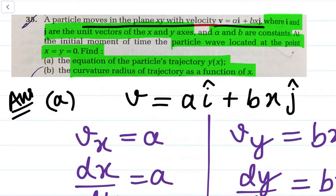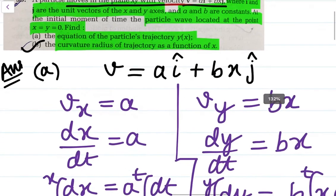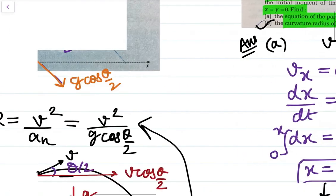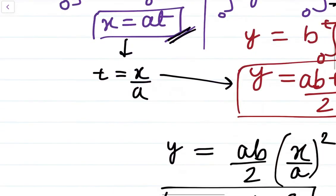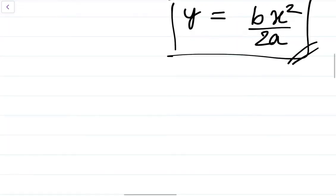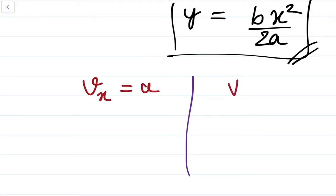The second part — finding the radius of curvature as a function of x — is really important for this chapter. We'll do it the basic way using R = V²/aₙ as I taught in the previous lecture. Now, vₓ = a and vy = bx.